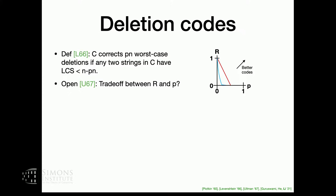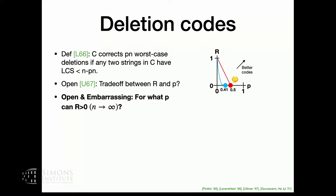This is an open question. What is the best trade-off between rate R and deletion fraction P? Maybe that's not so embarrassing because we know even for erasures and substitutions this is still open — there's the GV bound and linear programming bounds. But the state of affairs is somewhat embarrassing: we don't even know for what values of P can we have R bigger than zero. By contrast, this has been known for substitutions and erasures since at least 1960. For substitutions, you can't do better than a quarter; for erasures it's like a half.